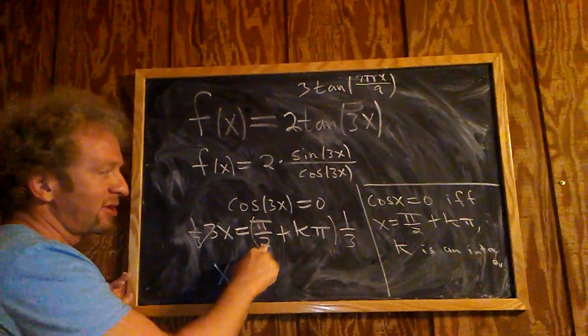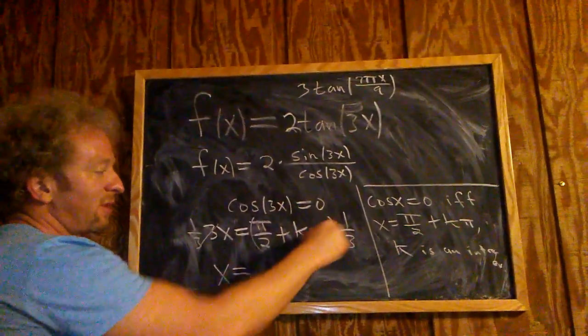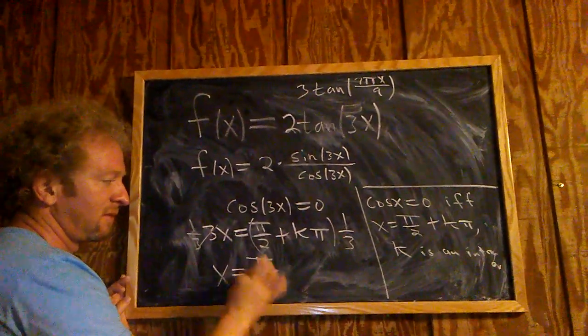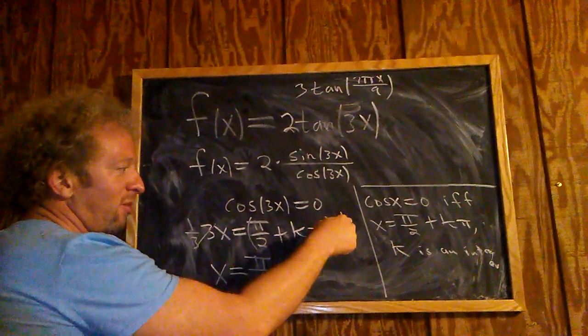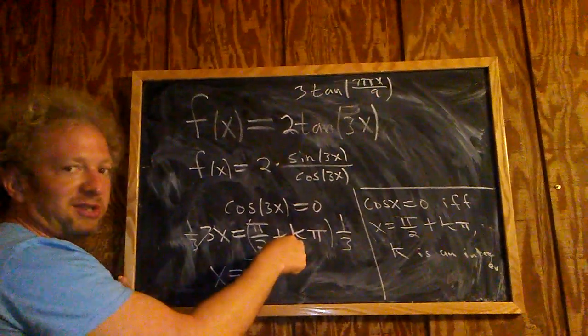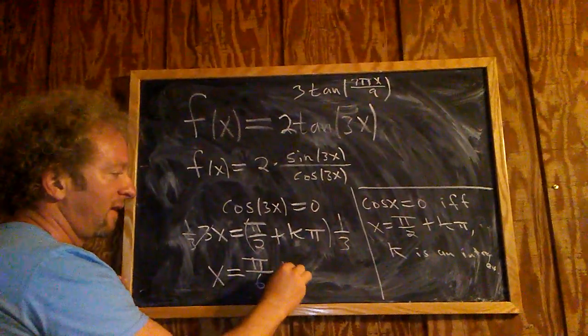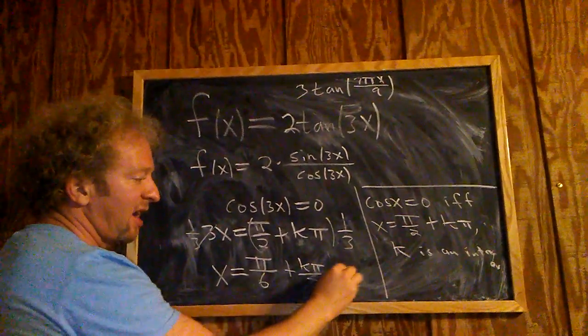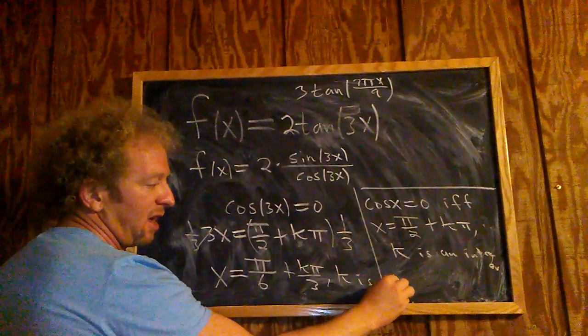Pi over 2 times 1 over 3. Pi times 1 is pi. 2 times 3 is 6. K pi times 1 over 3. Well, 1 times k pi is just k pi, just k pi over 3. And let's not forget to say k is an integer.